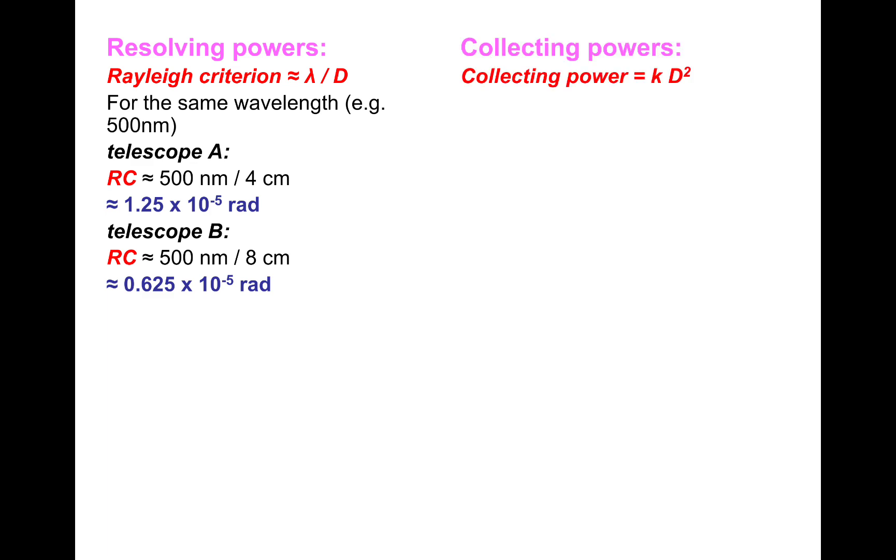And finally, let's look at the collecting powers. We know that collecting power is proportional to D squared. So you just put a constant in there. Collecting power equals KD squared. K would be a constant for both telescopes. Telescope A - so 4 squared times K, which would be 16K.